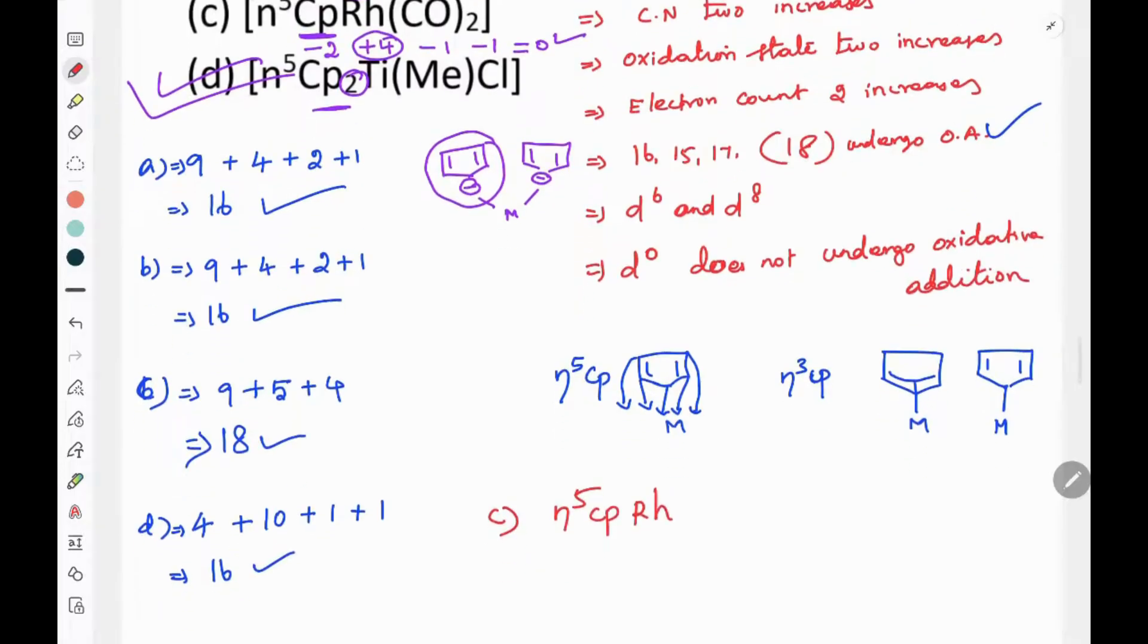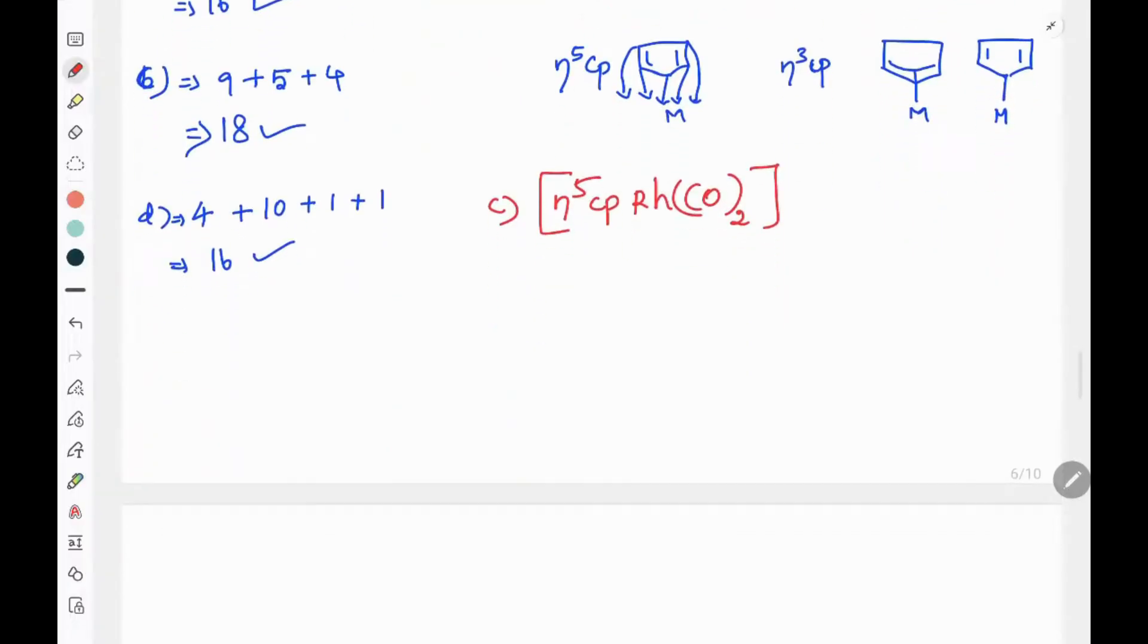Now someone asked about C - if it's 18 electrons, why doesn't it undergo oxidative addition? If you read the standard book, this one does not undergo oxidative addition because this one has a slipping ligand - a flexidentate ligand. It's eta-5 and can slip to eta-3. When it's 18 electrons with the slipping ligand, it doesn't undergo oxidative addition.